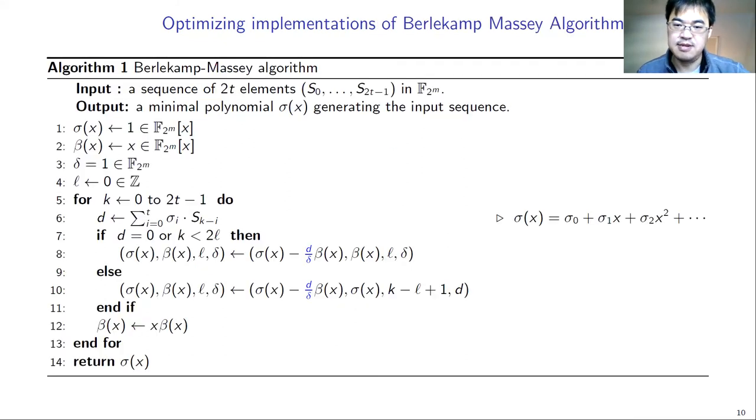And here comes the Berlekamp-Massey algorithm. We list the algorithm on this page. It looks complicated, but the actual computation only occurs in line 6, an inner product, and line 8, a vector multiplies a scalar. There is one difference from the previous implementation from the NIST submission. In the submission, they use an inversion-free algorithm. But we compute the inverse of delta in line 8. We think the inverse can be computed faster than the vector-scalar multiplication here.